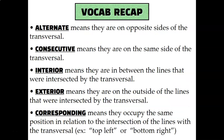As a quick vocab recap: alternate means they're on opposite sides of the transversal, and consecutive means they're on the same side — so alternate and consecutive are antonyms. Interior means they're between the two lines that were intersected by the transversal, and exterior means they're on the outside, so interior and exterior are also antonyms. Corresponding is its own thing — it means the angles occupy the same position in relation to the intersection of the lines.